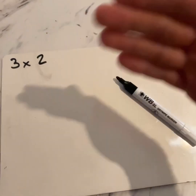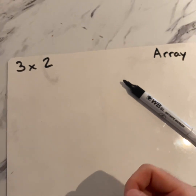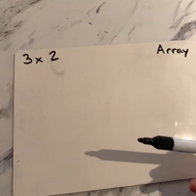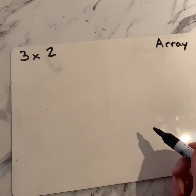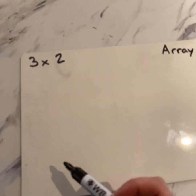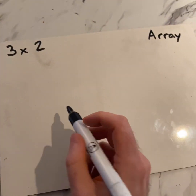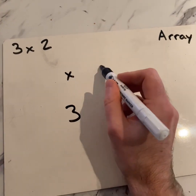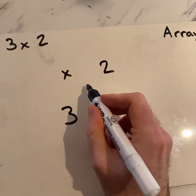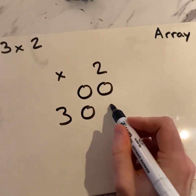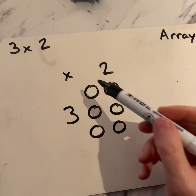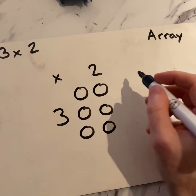Building from that idea of repeat addition and what a number feels like, we can actually start to look at something called an array — a way to picture a times table fact or a group of numbers. So I've got the problem three times two. Well, really it means three groups of two. I've laid it out: one group of two, two groups of two, three groups of two. I can find the answer now just by counting up those dots: one, two, three, four, five, six. Three times two is six.